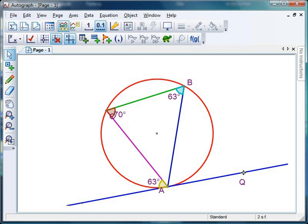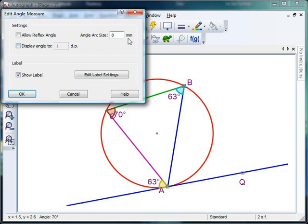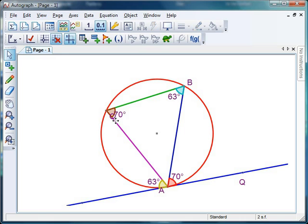And that's 70, cross your fingers and hope that this is the same. Q to A to B, angle, fat, no decimal places, nice. OK, and then we can just try and get into this theorem a little bit more deeply.